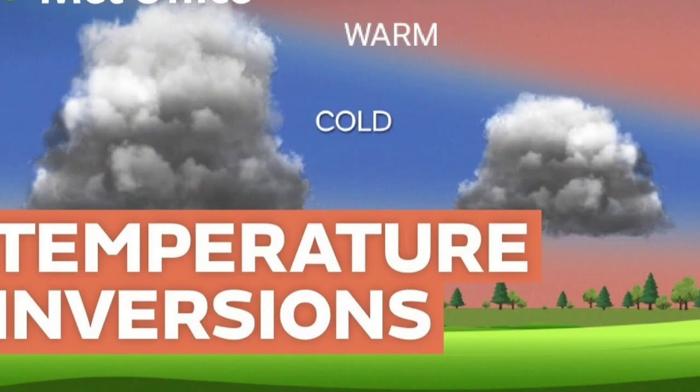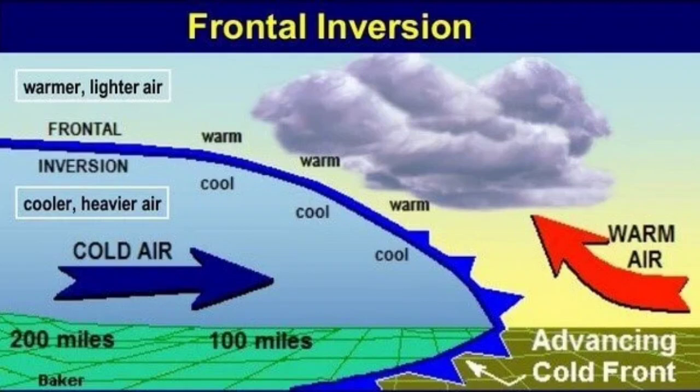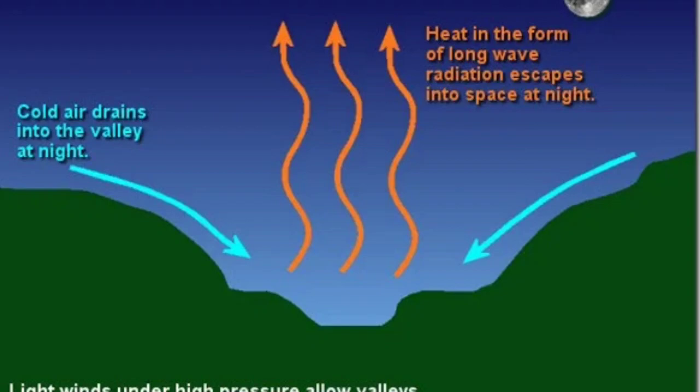In the polar region, temperature inversion is common throughout the year as the insolation received there is very low. Dense fog in the winter morning is a common feature which happens due to temperature inversion. Temperature inversion is also common in the hilly and mountainous regions due to air drainage.